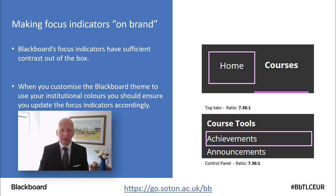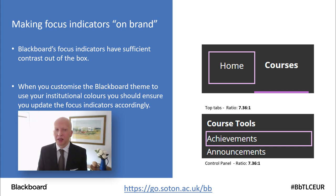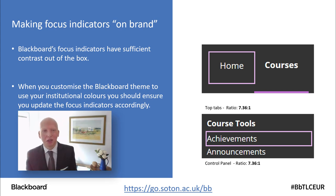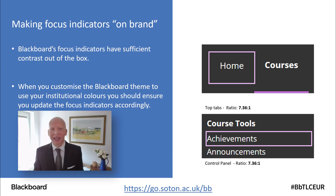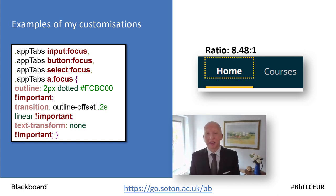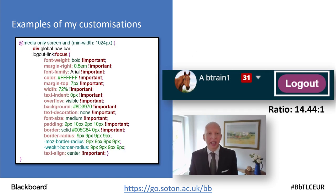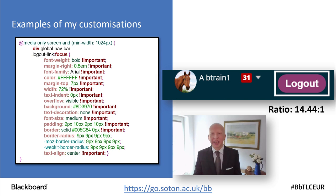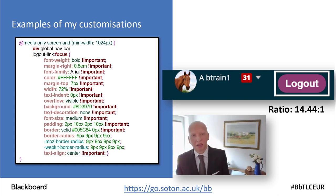The Blackboard default focus indicators are fine — excellent, in fact, at an enhanced level of greater than 7 to 1. But if we change the colours of our Blackboard theme to use our institutional brand, we need to consider the focus indicators as well. For example, I changed the background colour of the top tabs area, so I need to make sure the focus colour is a brand colour and also has sufficient contrast. Here you can see the code — I also wanted to change the Log Out icon, since the default tiny power button icon was never noticed, so I changed it to say 'Log Out' and made it big.